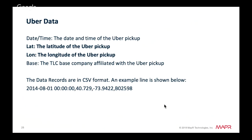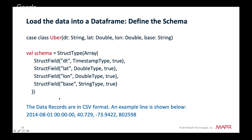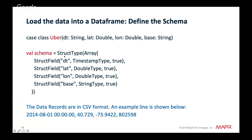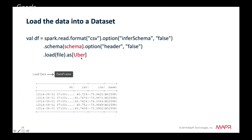Our Uber data contains the date and time of the pickup, the latitude, the longitude, and the base company affiliated with the pickup, in comma-separated format. We use a Scala case class to define the schema corresponding to a line in the file, specifying the Uber class that corresponds to this format.